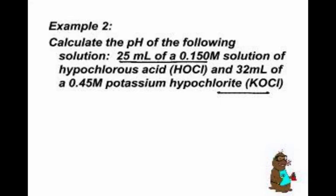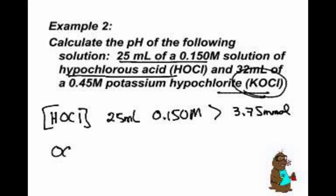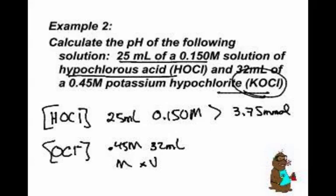I think this is a buffer. We've got to double check. What have we got? We've got hypochlorous acid. HOCL. What do we know about HOCL? We've got 25 milliliters and it's 0.150 molar. So that's 3.75 millimoles. And then we've got KOCL. In the KOCL, who do I care about? OCL negative. What do I know about OCL negative? I've got 0.45 molar and 32 milliliters. So M times V is 14.4 millimoles. Now, do we have a buffer? We do. We have a weak acid and its conjugate partner, and they're within a factor of 10.